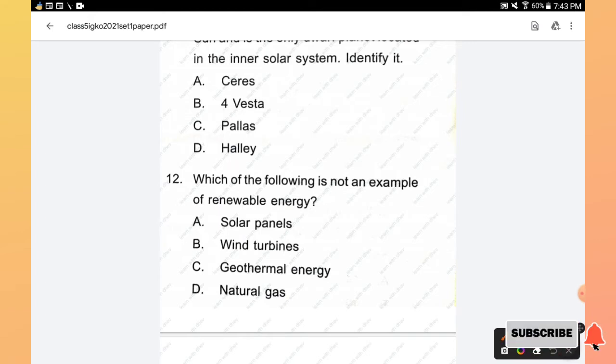Question number 12: Which of the following is not an example of renewable energy? Options are solar panels, wind turbines, geothermal energy, and natural gas. The right answer is option D, natural gas.